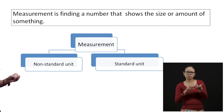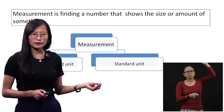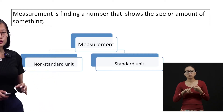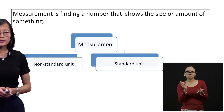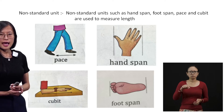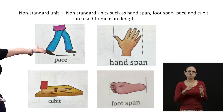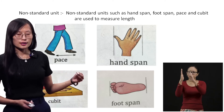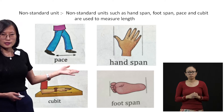Measurement can be of non-standard unit and standard unit. Non-standard units, which you have already learned in Class 2, are those which are not fixed. Standard units are fixed for a fair comparison. Non-standard units such as hand span, foot span, pace, and cubit are used to measure length. You can see in the picture: this is your pace, this is your hand span, this is your cubit, and this is your foot span. Before standard units were introduced, we used these.